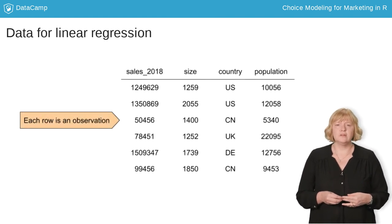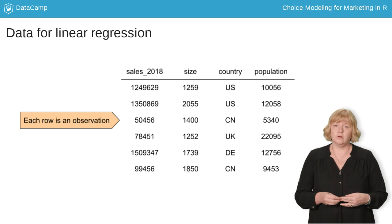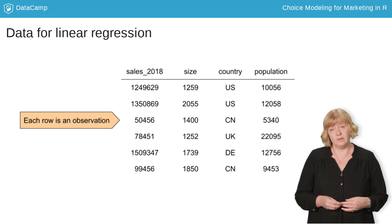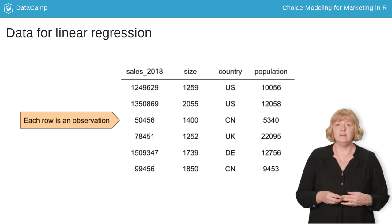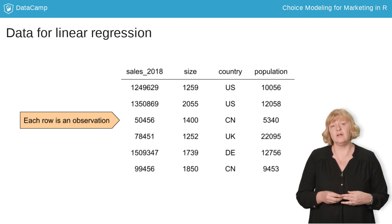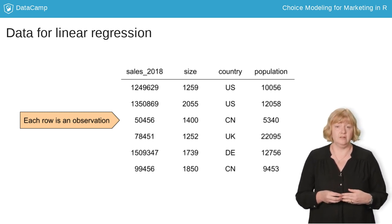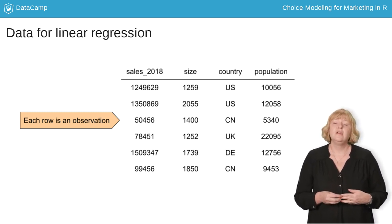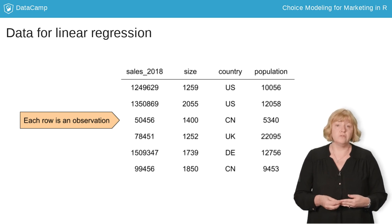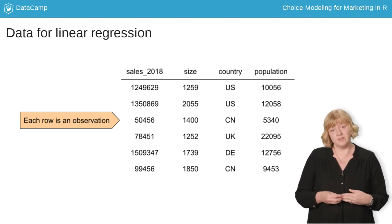We usually organize data in rows where each row represents one observation. For the data here, each row is an observation of sales at a store, and we have some information about the characteristics of each store. In this data, the number of rows is the number of observations.